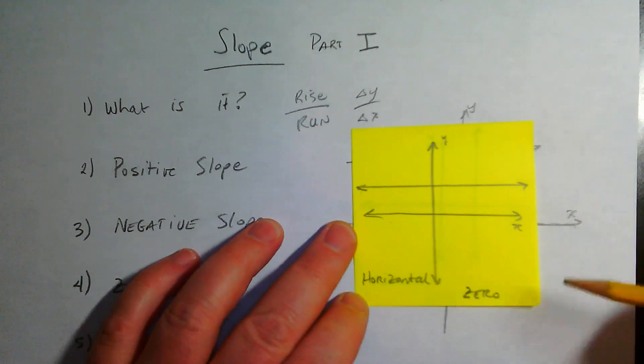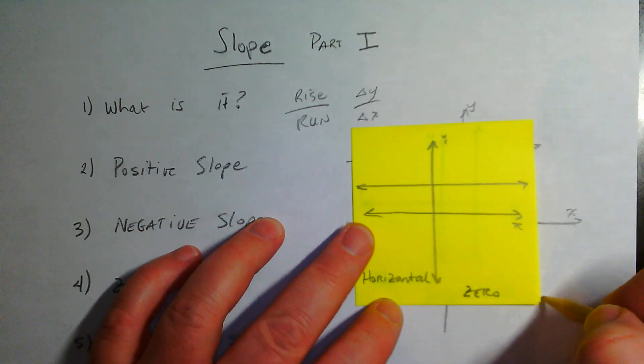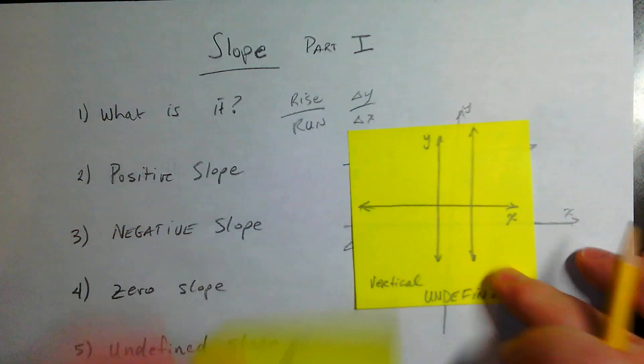Whereas if you had a vertical line, straight up and down, that slope would be undefined.